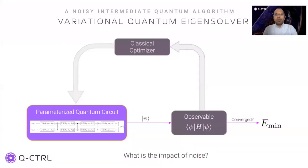Let us discuss the variational quantum eigensolver, or VQE algorithm, which has been used to find the ground state energy of small molecules and solve small condensed matter problems. It is a prototypical NISQ-era hybrid quantum-classical algorithm. A quantum computer prepares a parameterized quantum state called an ansatz, and a classical optimizer optimizes a cost function generated from the quantum state. Starting from a random or heuristic set of parameters, the classical optimizer searches the parameter space using this hybrid loop. The calculation stops when the cost function converges. When the cost function is the expectation value of an observable, the variational theorem guarantees that the optimal value is an upper bound on the minimum possible value of the observable.